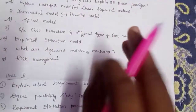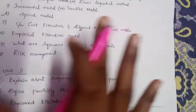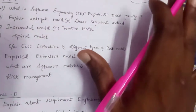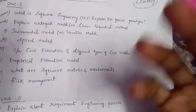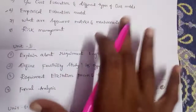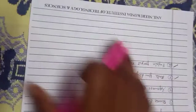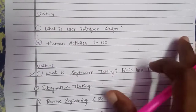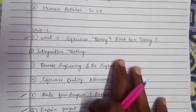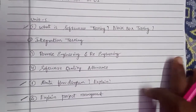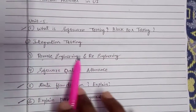We need to talk about clarity, especially for placement preparation with one month or low time. Whether it's software engineering, DBMS, SQL, or similar subjects — take time to review. Coming to Unit 4: user interface design and human activities in UI.